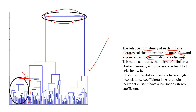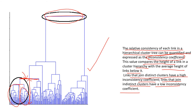The relative consistency of each link in a hierarchical cluster tree can be quantified as the inconsistency coefficient. This value compares the height of the link with the average height of the links below it. Links that join distinct clusters have a high inconsistency coefficient; links that join similar or non-distinct clusters have a low inconsistency coefficient. For two closely related clusters, the link's own height is almost comparable to the average height below it, giving a low inconsistency coefficient.